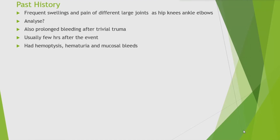Past history reveals frequent swelling and pain of different large joints — hip, knees, ankles, elbows — not symmetrical, at different times one joint swells. What possibilities come to mind? Causes of episodic joint swelling: gout is one possibility, pseudogout is another, reactive arthritis, and in younger patients we have to consider rheumatic fever.